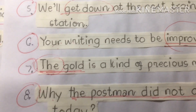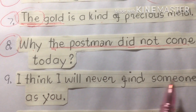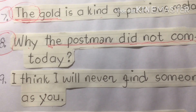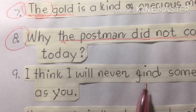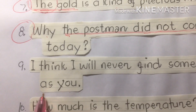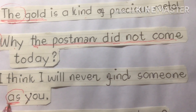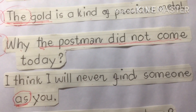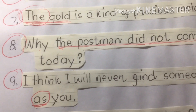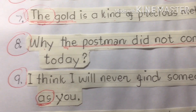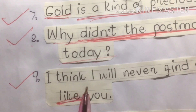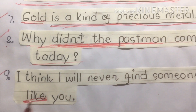Nine: 'I think I will never find someone as you.' The word 'as' makes this sentence incorrect. Instead of 'as,' we change it to 'like.' The correct sentence is: 'I think I will never find someone like you.'